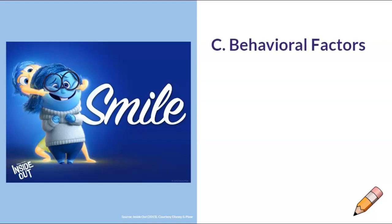Behavioral factors involve the outward demonstration of the emotion. This behavioral expression can be both verbal and non-verbal. When sad, you may share out loud your feelings of loneliness and sadness with others if you're venting. Alternatively, you may choose to avoid people when you're depressed. Avoidance is still a behavioral yet non-verbal expression of an emotion. Crossing your arms and frowning are additional non-verbal examples of showing the emotion of frustration or annoyance.